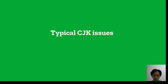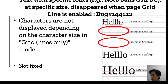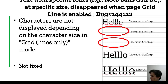Typical CJK issues. One issue is a character not displayed depending on the character size in grid line only mode. For example, at 43 point there is no problem, but at 44 point the character is not displayed. At 52 point it is not displayed, but at 53 point there is no problem. This is not fixed.